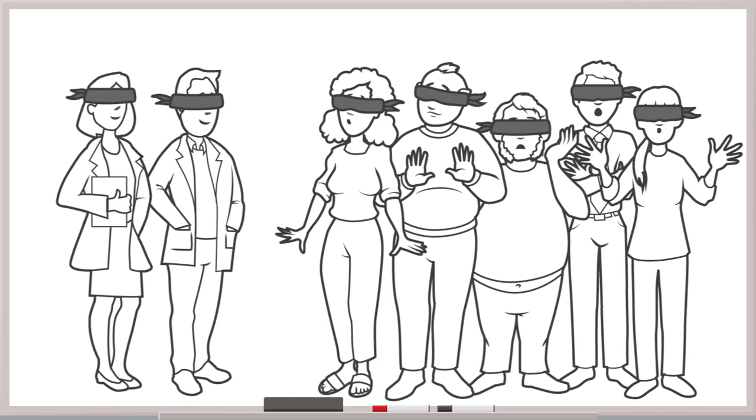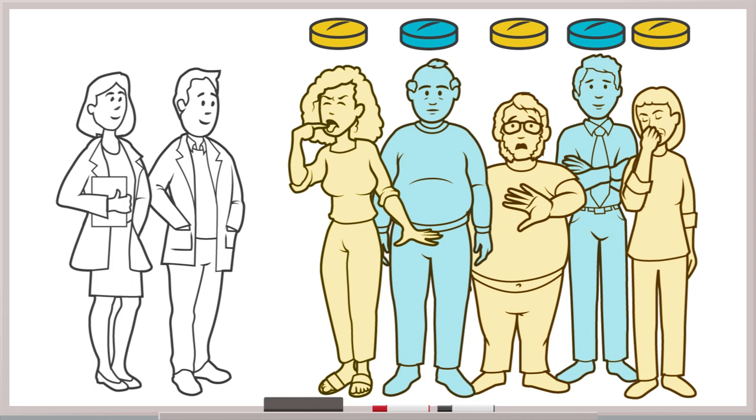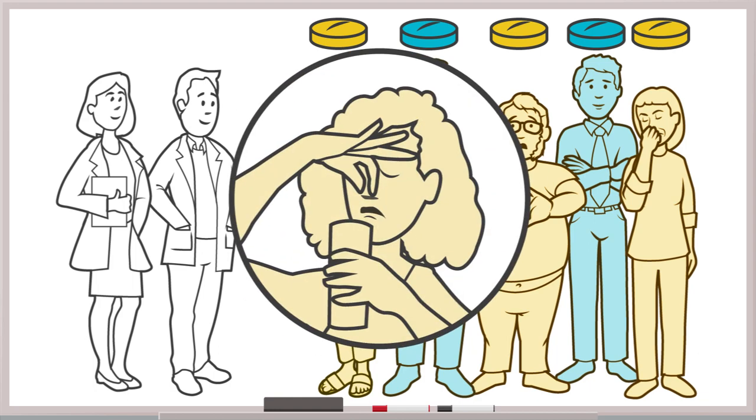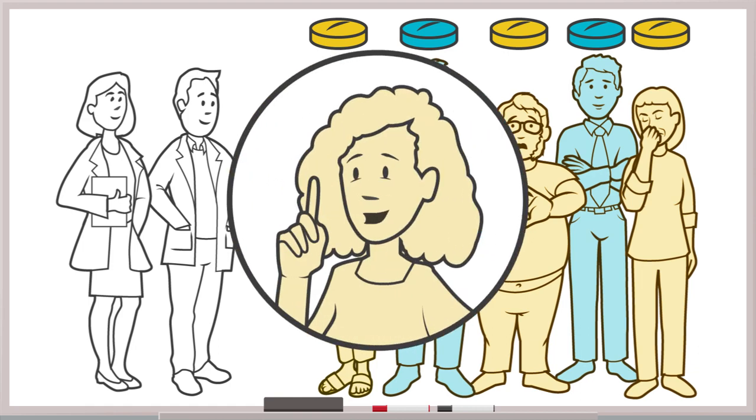While, of course, blinding is the ideal in a study, it is easier said than done. For example, what if the secret ingredient of your new headache medicine tastes horrible? Well, the placebo is a sweet sugar pill. People trying to scarf down this medication might just get the sense that they're taking the active treatment, and act accordingly.